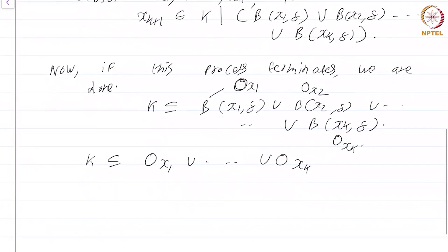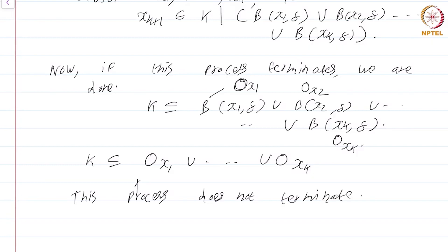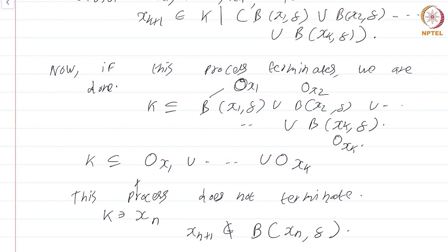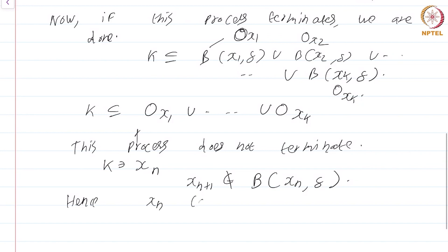So the only other possibility is this process does not terminate, which just means we have found a sequence x_n in K. Not only have we found an x_n in K, but x_{n+1} is not an element of B(x_n, delta). That is exactly the way by which the next element in the sequence was chosen.